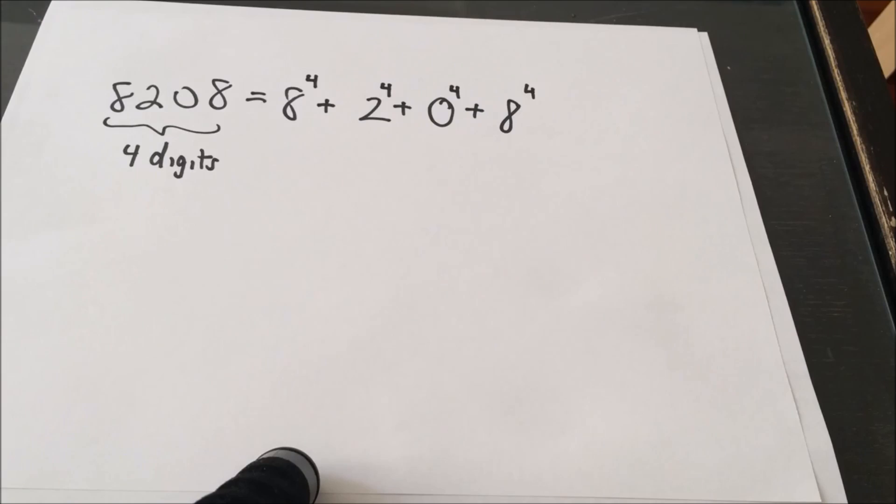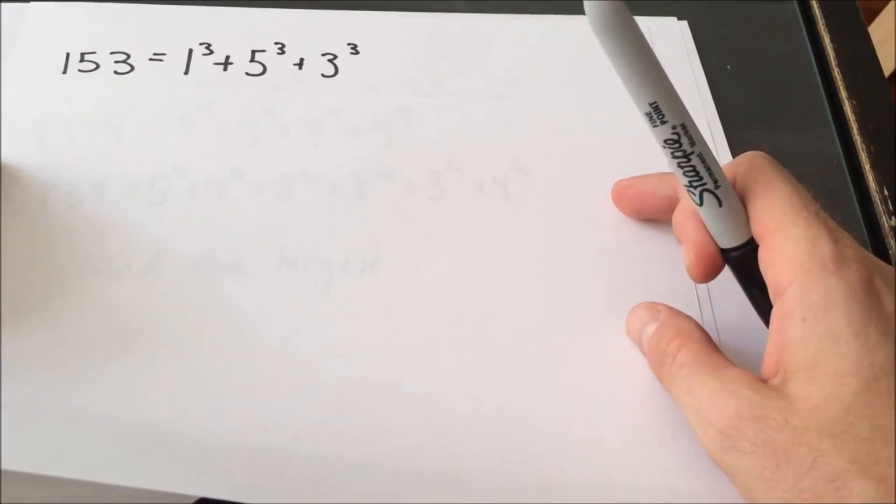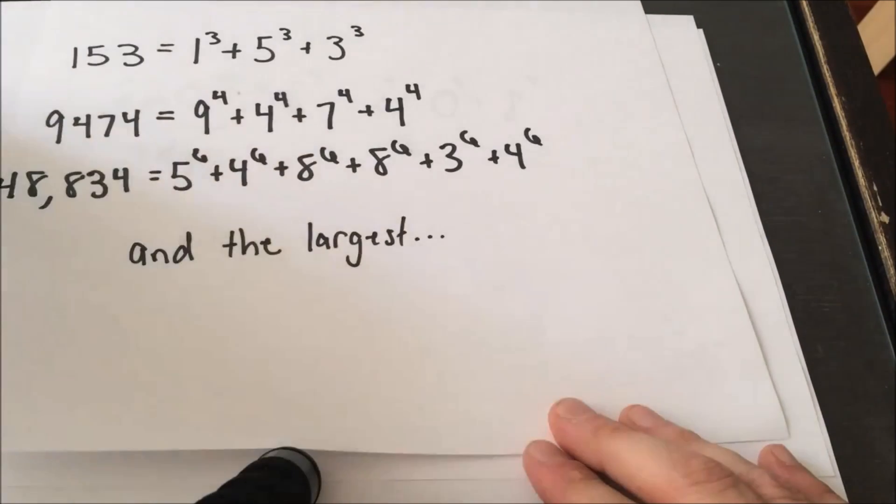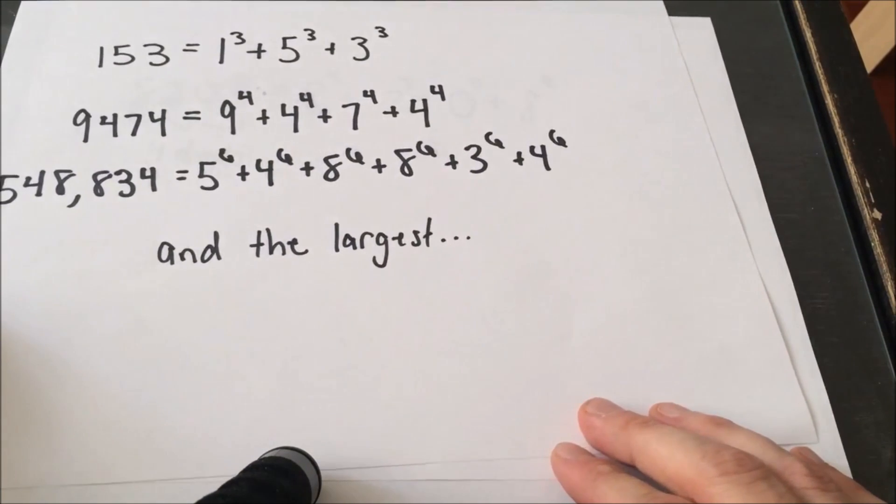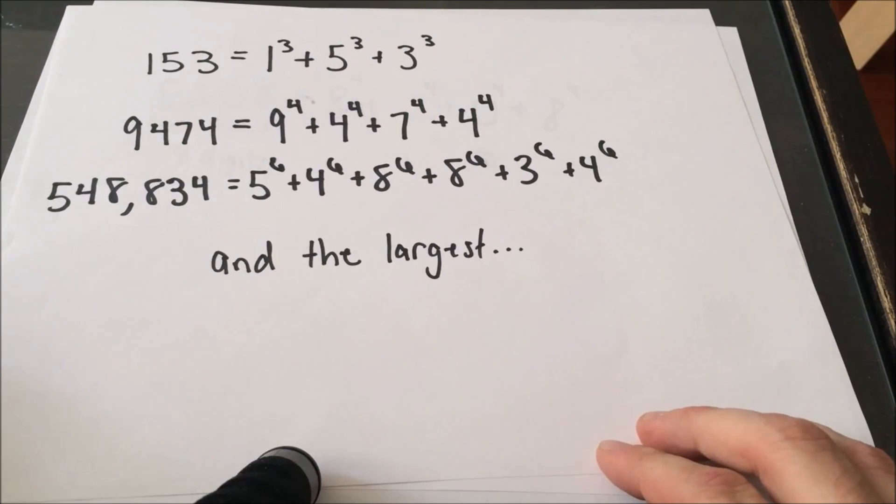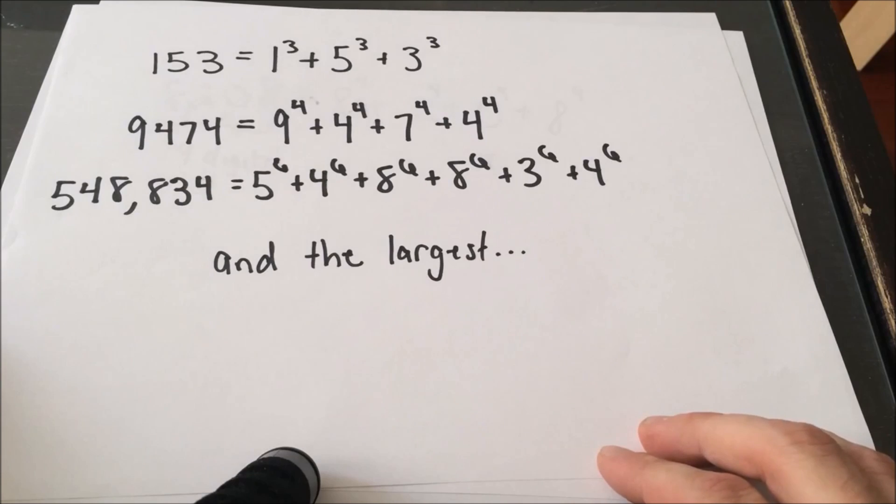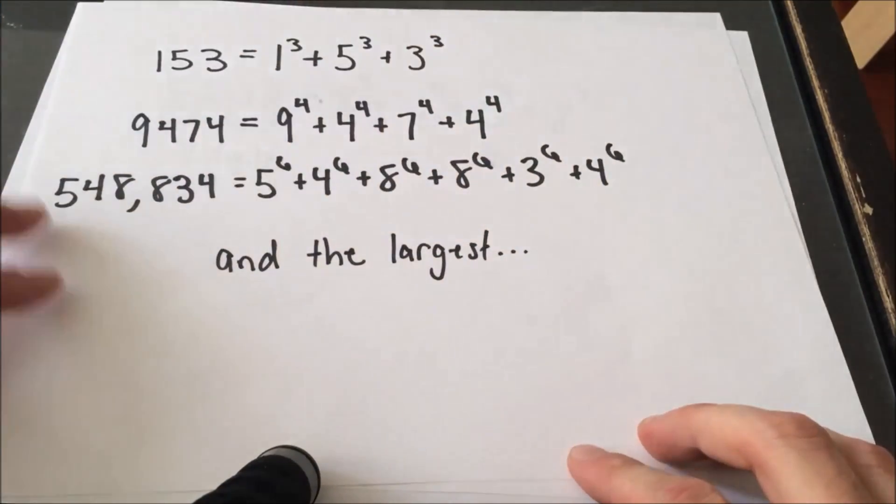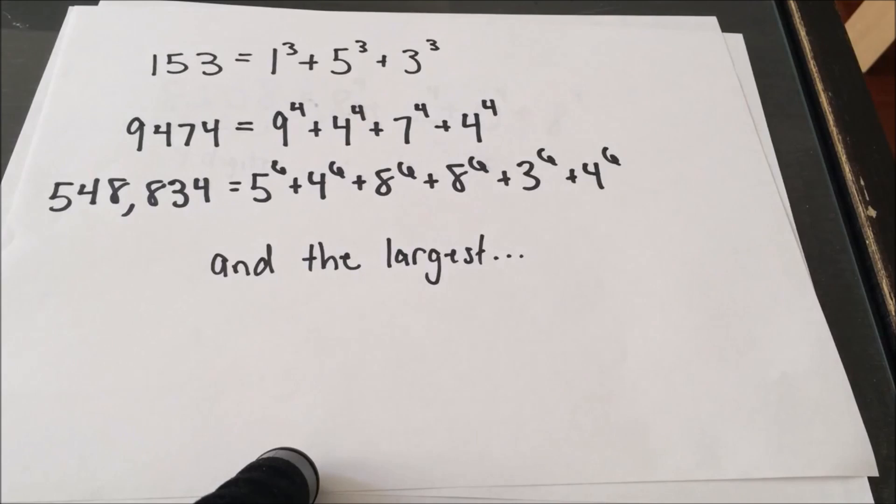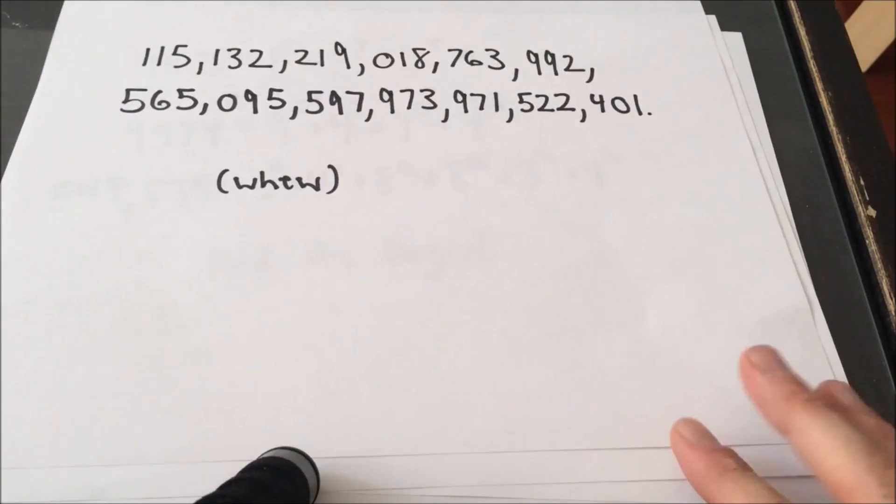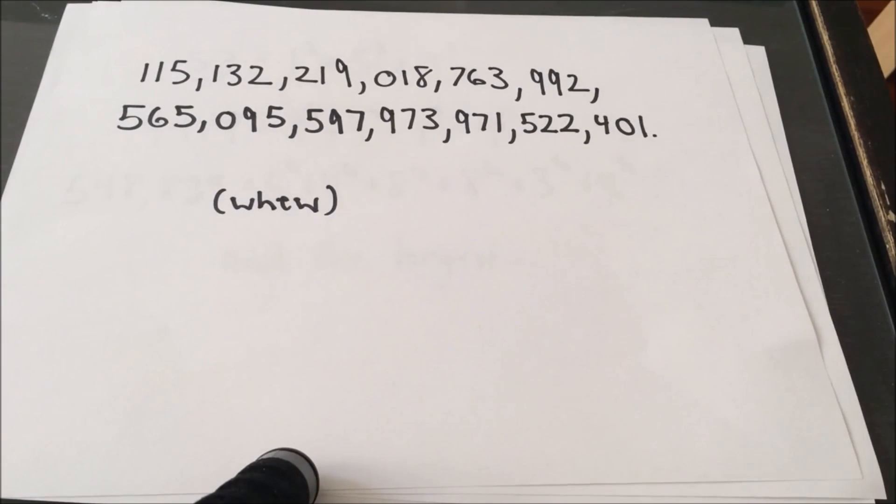So a couple other examples of some narcissistic numbers. Turns out 153 is a narcissistic number. It turns out that 9474 is also a narcissistic number, another four digit one. 548,834, that is also a narcissistic number. So again, notice for this, we've got six digits. So everything's being raised to the sixth power. And the largest of them all, how could we leave that one out? So this is all the same number. I just had to run out of room. So I'm not even going to try to say that number. You can go for it yourself. So that is the largest known narcissistic number.